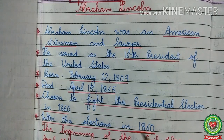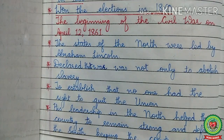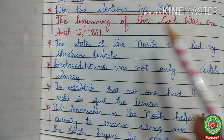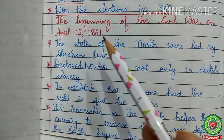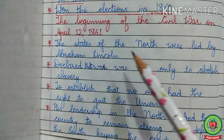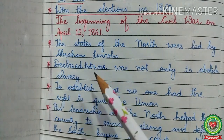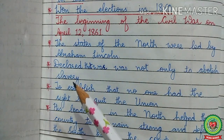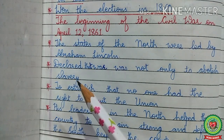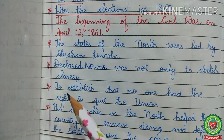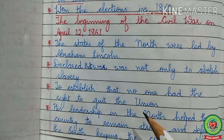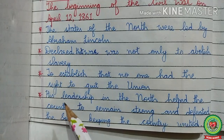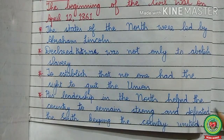He was chosen to fight the presidential election in 1860, and he won the elections. After that, the Civil War began on April 12, 1861. The states of the North were led by Abraham Lincoln. He declared that the war was not only to abolish slavery — his motto was not only to abolish slavery, but he also wanted to establish that no one had the right to quit the Union.